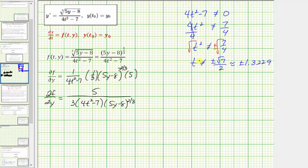Now let's look for restrictions for the partial of f with respect to y. Notice that (4t² − 7) appears in the denominator, so the partial derivative also has the restriction that (4t² − 7) can't equal zero — it is also not continuous at those t values. Additionally, the quantity (5y − 8) can't equal zero either, as that would also cause division by zero. So the restriction on y is that (5y − 8) can't equal zero, meaning y can't equal eight-fifths.